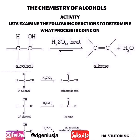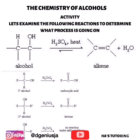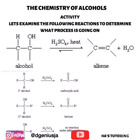Let's see if you were listening — we're going to do an activity together and examine the following reactions to determine what process is going on. Looking at the first reaction, we see a particular alcohol being transformed to an alkene and water. This is dehydration, and the alcohol is ethanol. Ethanol is being transformed with the aid of sulfuric acid to an alkene and water — a hydroxyl group and a hydrogen ion are displaced to form the alkene.